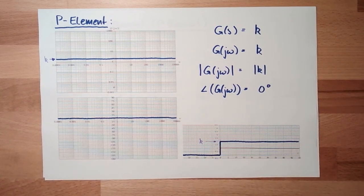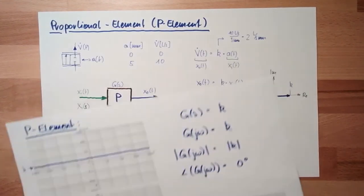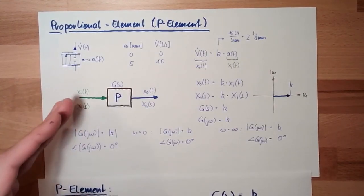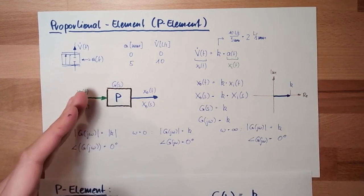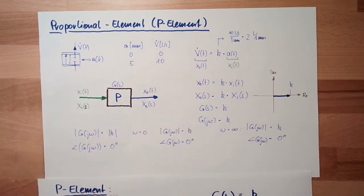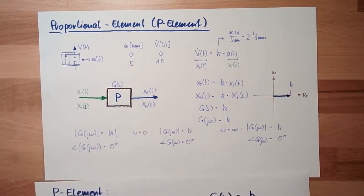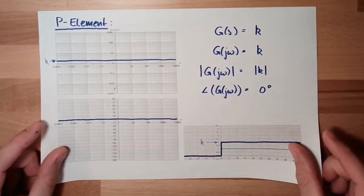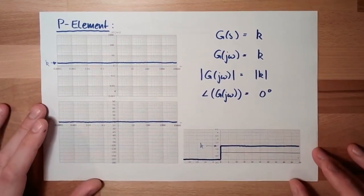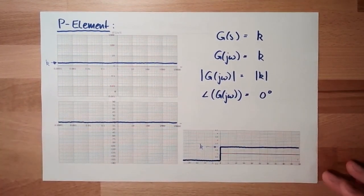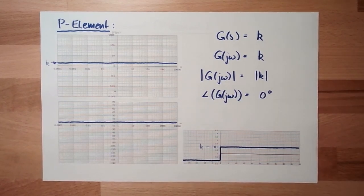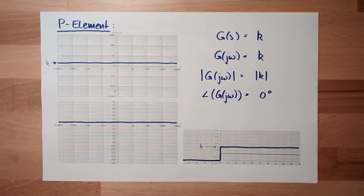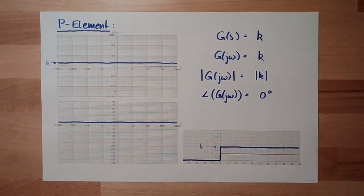This is the most simple element — it's just a proportional factor between the input and the output. P element, proportional element. Next time we're talking about a little bit more complicated thing: the I element, or integration element. For this time, thank you very much for listening and goodbye.